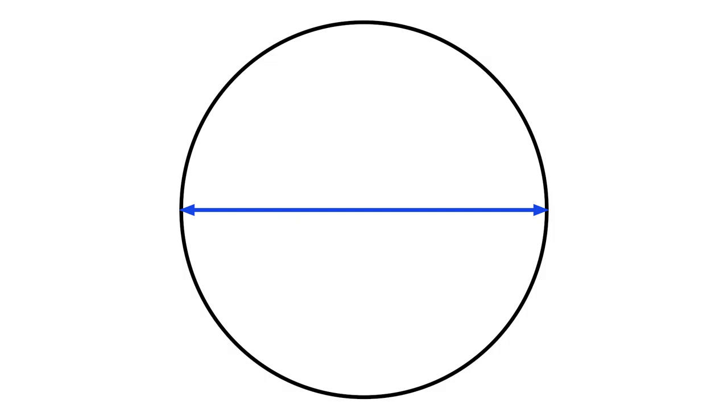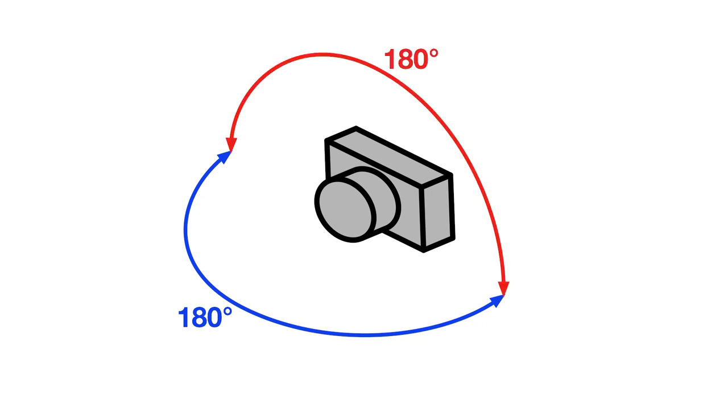Consider this horizontal blue line. It represents a 180 degree horizontal arc around the camera. Consider now another 180 degree arc around the camera, the one in red. It's a vertical arc passing above the camera.